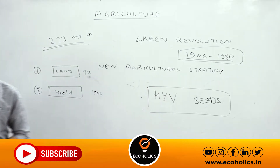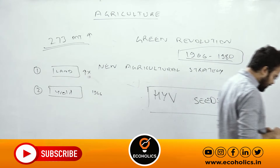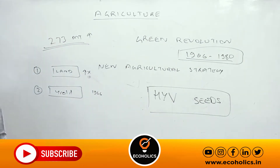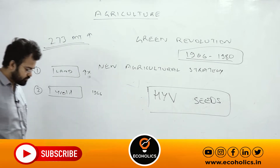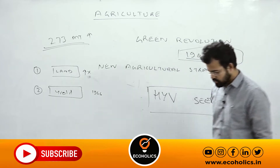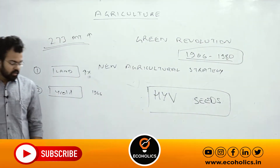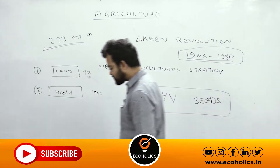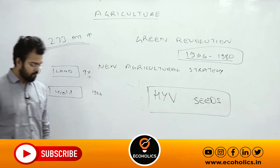In 1991, RBI devalued the rupee. That helped in boosting agricultural exports, and that led to an increase in agri GDP.